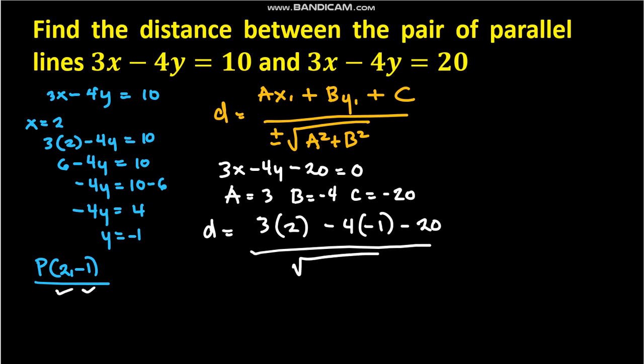So the denominator is square root of 3 squared plus negative 4 squared. Therefore, the directed distance is (6 - 4 - 20) divided by √(9 + 16), which is √25 = 5.